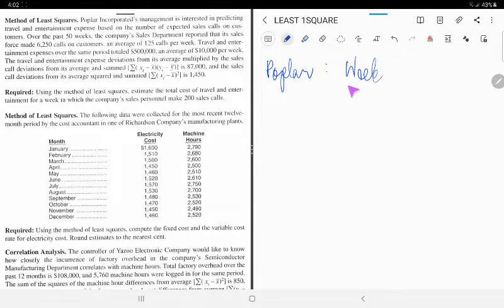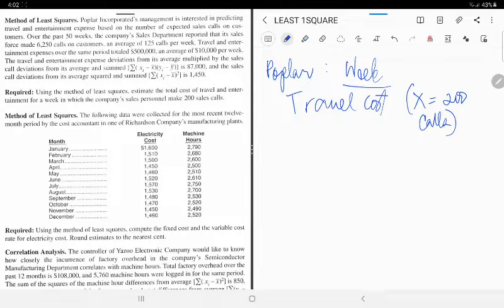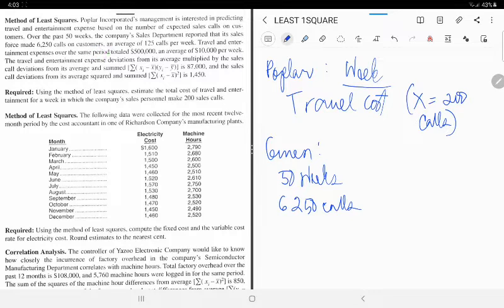It will be one week of the travel cost in the entertainment industry and our X is 200 calls for the sales personnel. Let's look at the relevant information. The given items: we have 50 weeks, 6,250 calls of the customer, and we are given 125 calls per week.